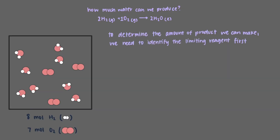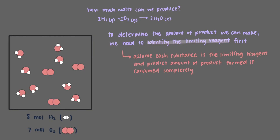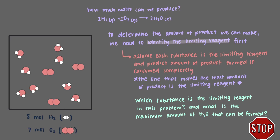To determine the amount of product we can make, we need to identify the limiting reagent first. To do that, we assume each substance is the limiting reagent and predict how much product would be made if it were consumed completely. The one that makes the least amount of product is the limiting reagent.